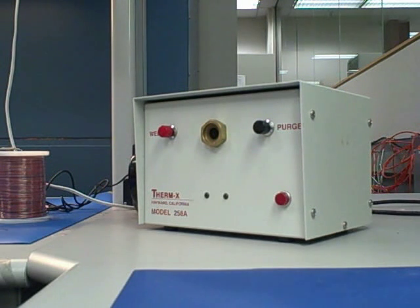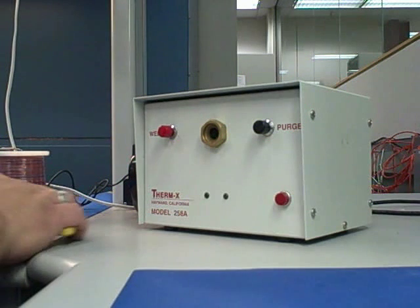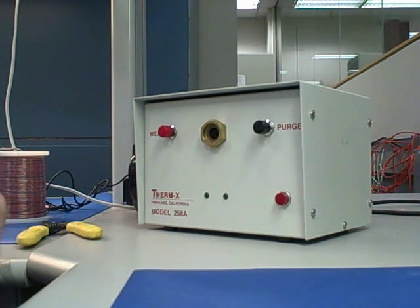When you strip it, you want to strip about half an inch to three quarters of an inch, and you want to use the strippers in such a manner that you'll get all three jackets, because you have three jackets on here: one on each wire and then one to contain both wires.